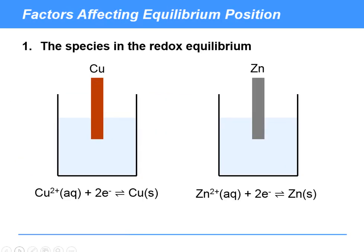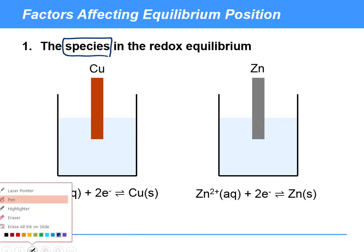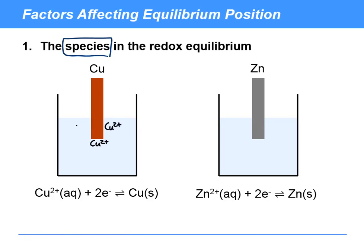So let's consider just very briefly the factors that affect the equilibrium position. The really important thing that you realise here is that the species in the redox equilibrium will affect the position. And that really is the basis of this whole topic of electrochemistry. We considered copper in the previous slide. There's relatively little ionisation of copper 2 plus.